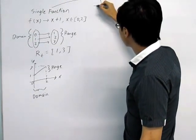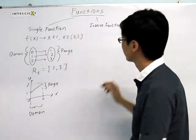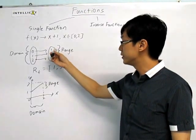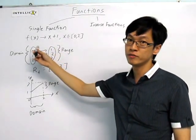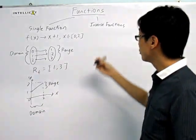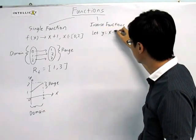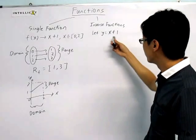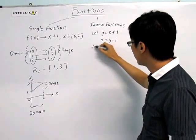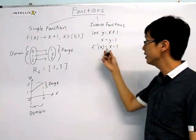The second type of function you need to learn is called inverse functions. The inverse function maps values back into the original value — that's why it's called inverse. You map from A to B, so the inverse function maps from B back to A. To find it: first, let y = x + 1. Second step, make x the subject: x = y − 1. Therefore, f inverse of x — change y back to x — gives you x − 1.